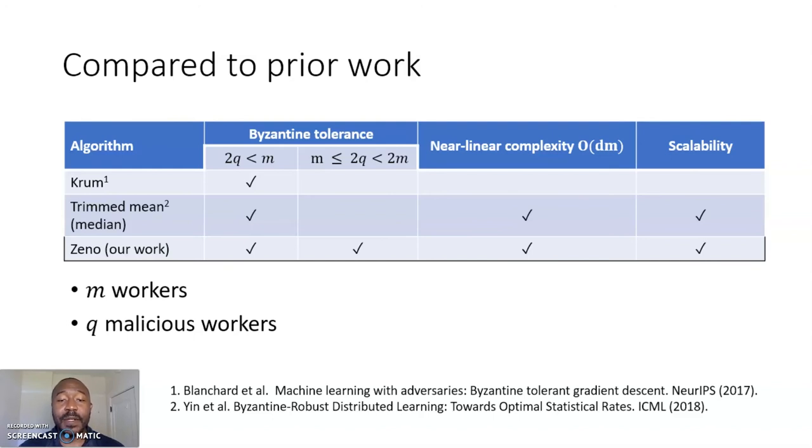So, in contrast to previous work, Zeno is more robust to new kinds of attacks, but it's also more efficient and tolerates more than half of the workers potentially being adversarial, significantly improving over existing work.